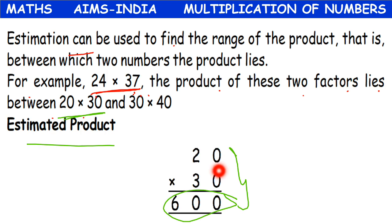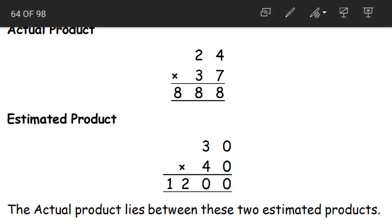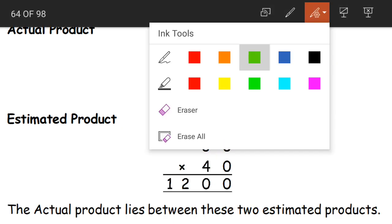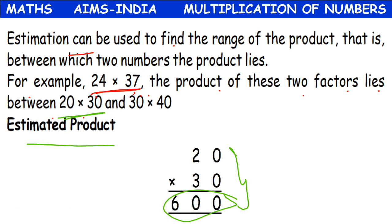The product cannot be less than 600 or more than 1200 — it lies between 600 and 1200 only. Remember: 20 and 30 is the range for 24, and 30 and 40 is the range for 37. You cannot mix these — one should be the range for 24 and the other should be the range for 37. You cannot multiply 20 and 40, or 30 and 30 together — that would be wrong.